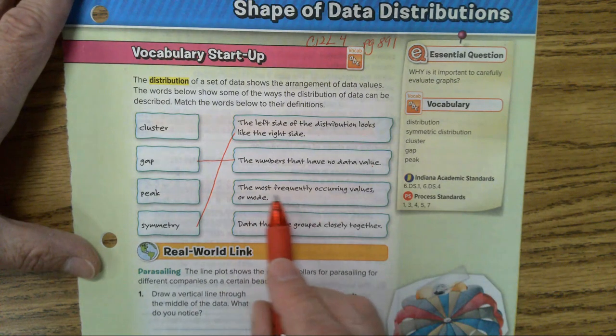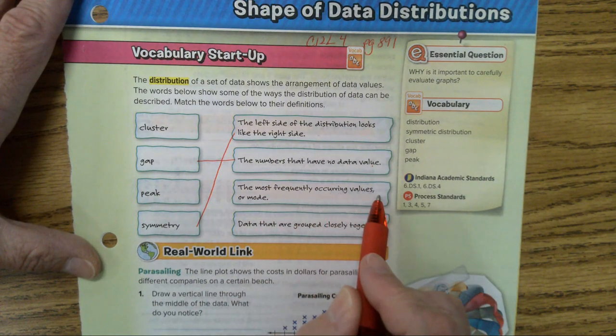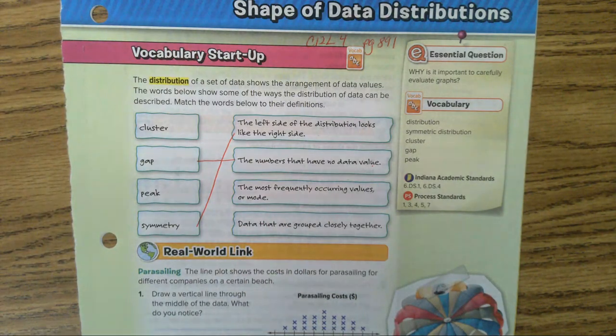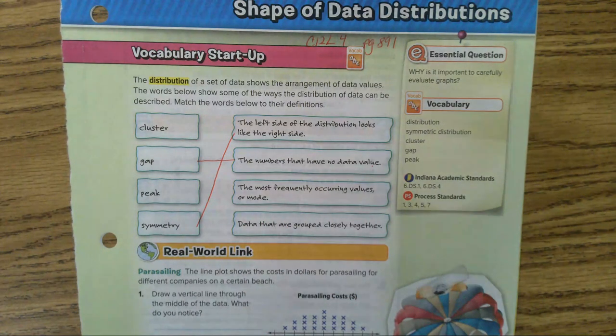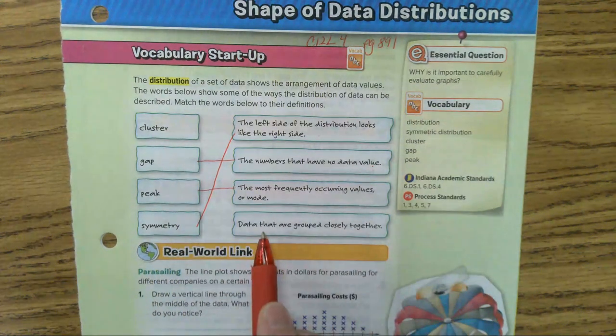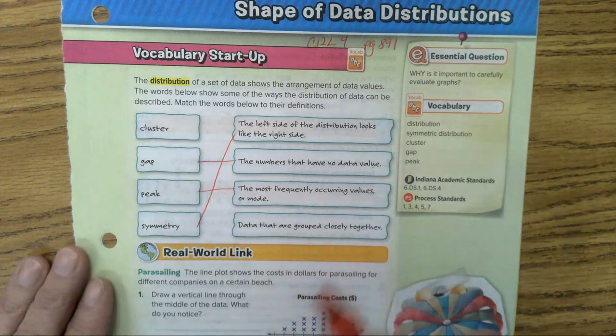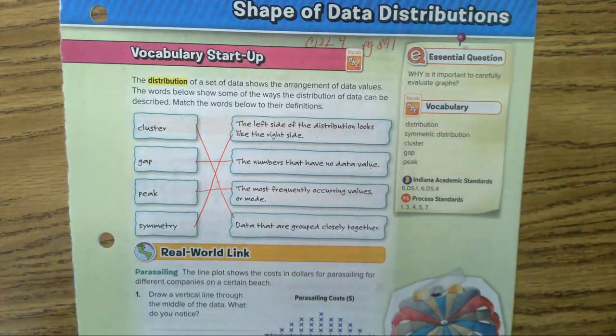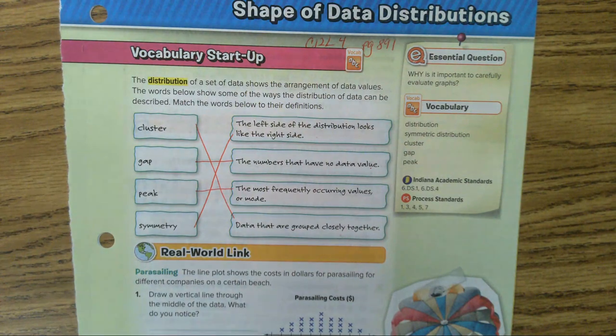The most frequently occurring values or mode. Which word do you think would go with the mode? Yes. The peak. That's correct. And now we know the last one. Data that are grouped closely together is a cluster. Any questions? Do you all have your lines drawn for the vocabulary?